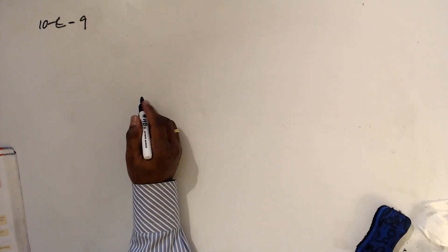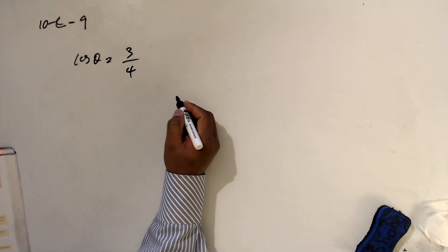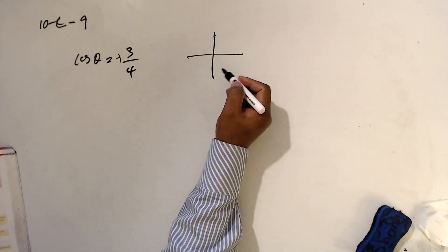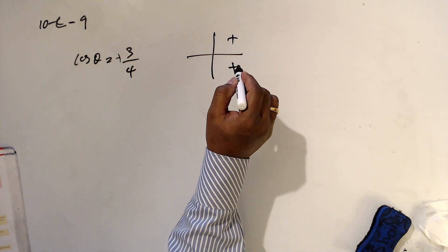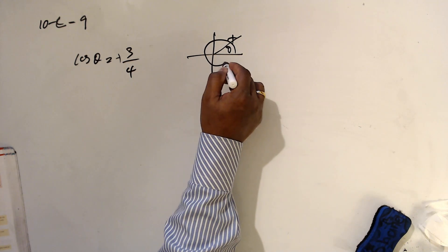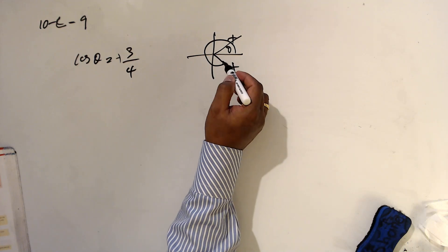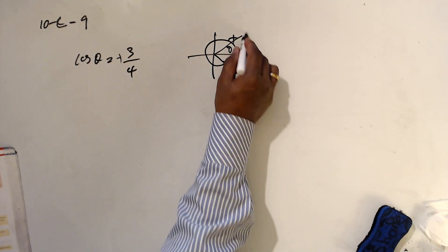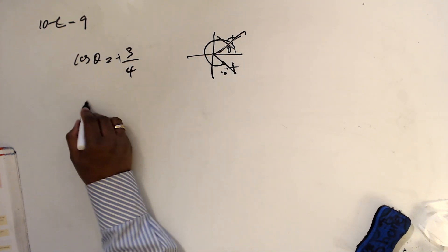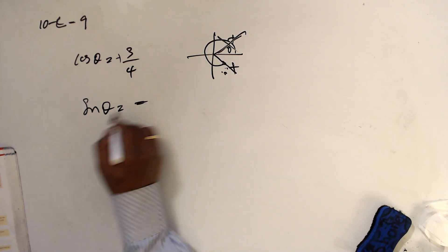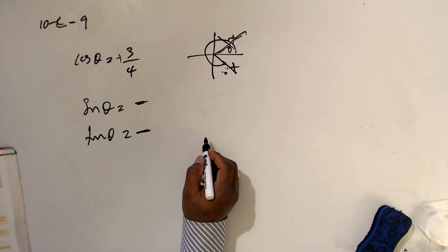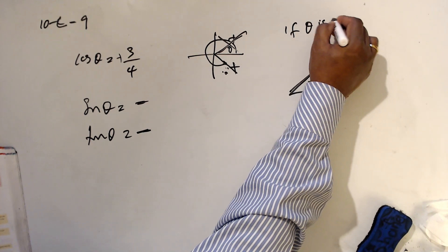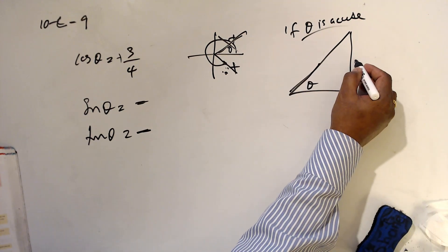So sin θ = √3/2 and cos θ = 1/2. Since the problem says θ is reflex, it is in the fourth quadrant. The sine ratio is negative and tan θ is also negative. Assuming θ is acute gives us the reference values: the sides are 3 and 4.